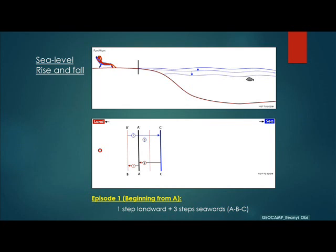Supposing that in the first episode of sea level change, the shoreline moves from point A to B and then back to C. From A to B is one step in the landward direction, and B to C is three steps in the basinward direction. In the next episode, the shoreline moves from point C two steps forward to A, and then five steps back to point D. In effect, the shoreline has made a net basinward movement.